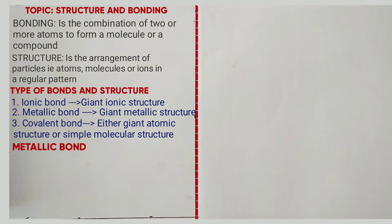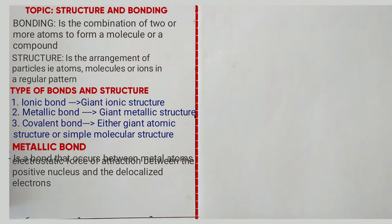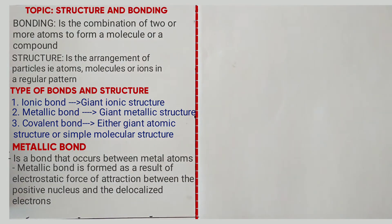Metallic bond is a bond formed between metal atoms. It is formed as a result of electrostatic attraction between the positive nucleus and the delocalized electrons.